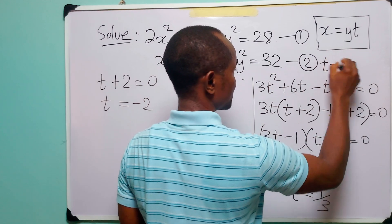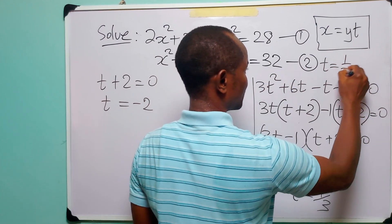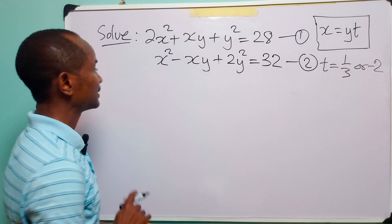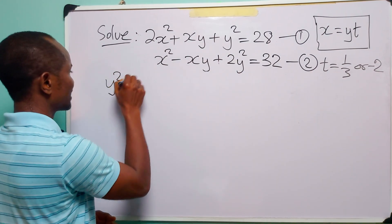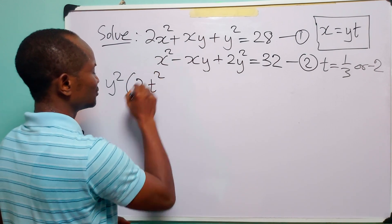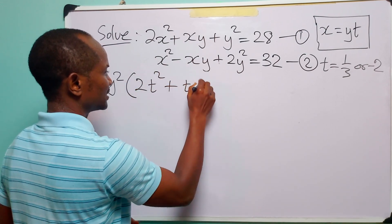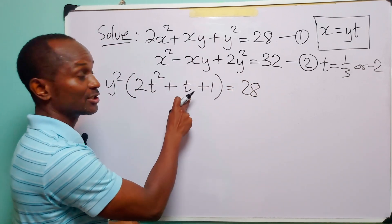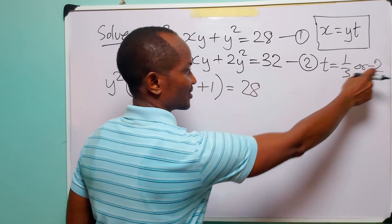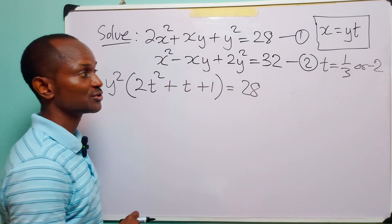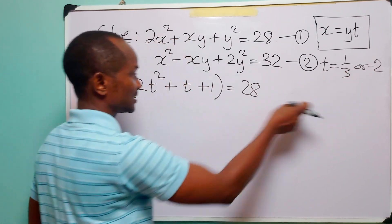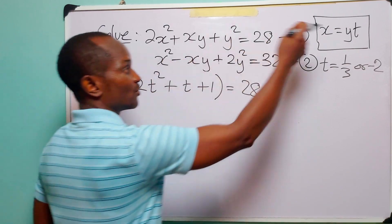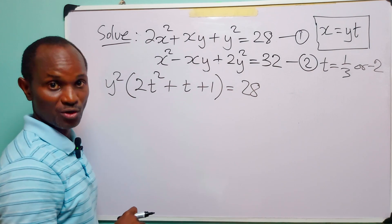Recall from equation 3 that y² times (2t² + t + 1) is equal to 28. Having found the values of t to be 1/3 and -2, we will substitute these values of t into this equation to get the values of y, and then use x = yt to get the resulting values of x.